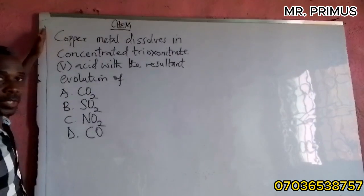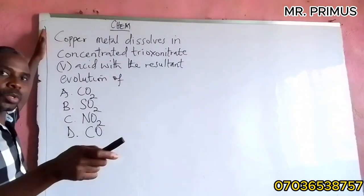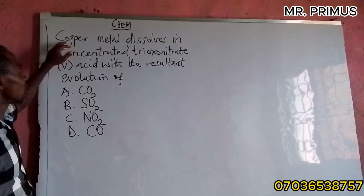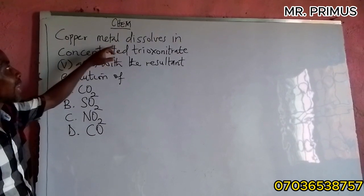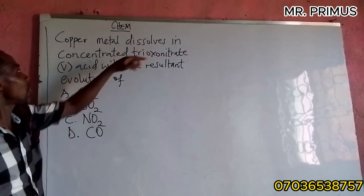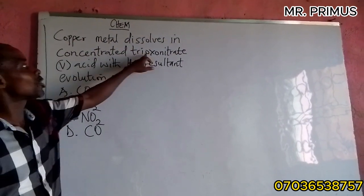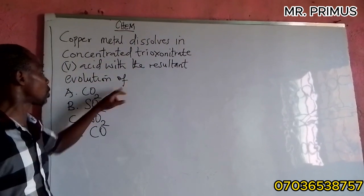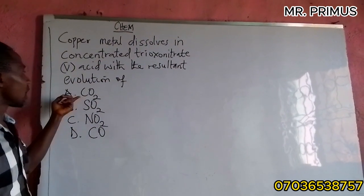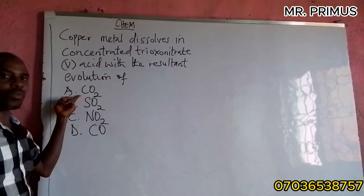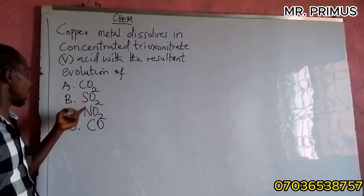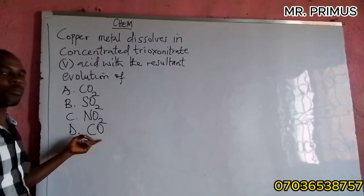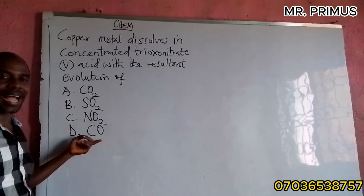See our first question — please watch this video to the end and other ones. Thank you very much. Copper metal dissolves in concentrated nitric acid (HNO₃) with the resultant evolution of: A) carbon dioxide, B) sulfur oxide, C) nitrogen dioxide (NO₂), and D) carbon monoxide.